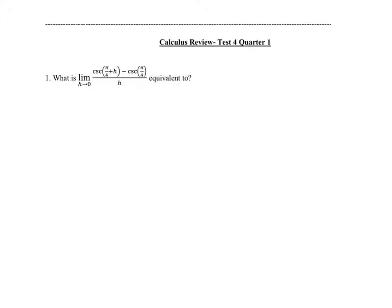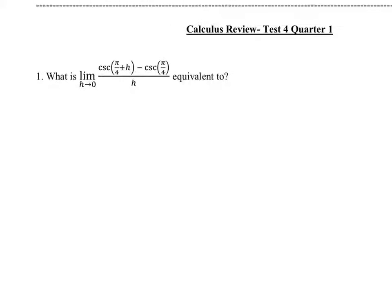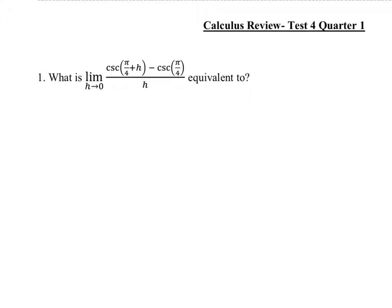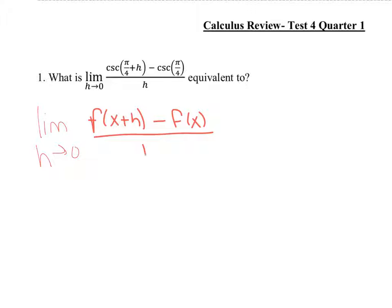The first question says: what is the limit as h approaches 0 of cosecant(π/4 + h) minus cosecant(π/4), all over h, equivalent to? You should recognize that this is the limit definition of the derivative, which is the limit as h approaches 0 of f(x+h) minus f(x), all over h.